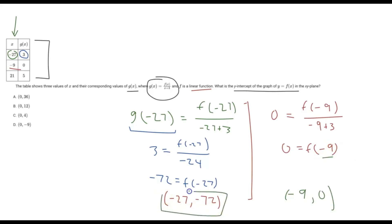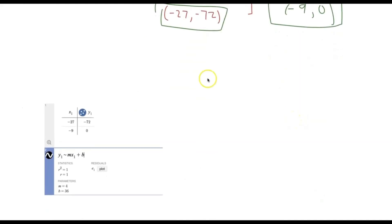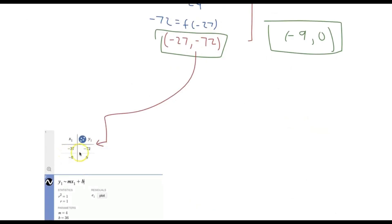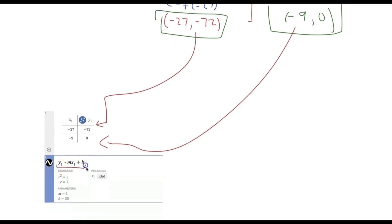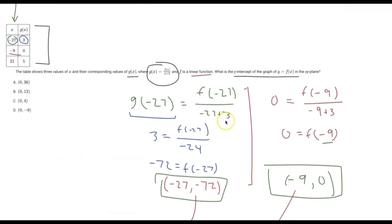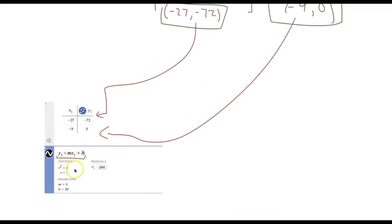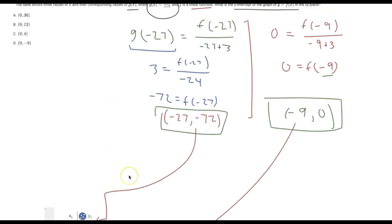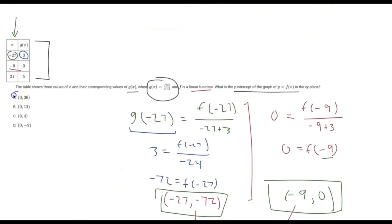So now we have our two coordinate points. These coordinate points are representative of our linear f of x function. We can go through an algebraic way to determine the y-intercept, or you can also use Desmos. If you watch our other video on problems you can crush using Desmos, this is a great example. If we scroll down, you can see here what I did is I created a table with these two coordinate points — negative 27, negative 72 and negative 9, 0 — and then I set up a linear regression because they told us f of x is a linear function. It tells me that our b value represents the y-intercept, and b is 36. Therefore, the answer choice will be A.